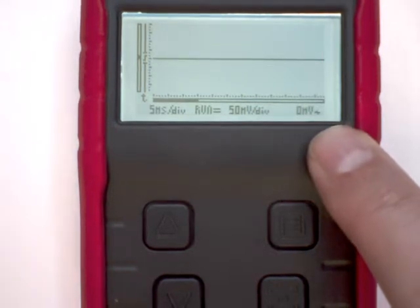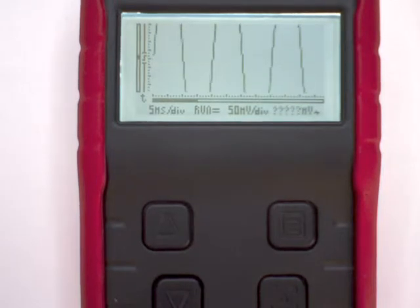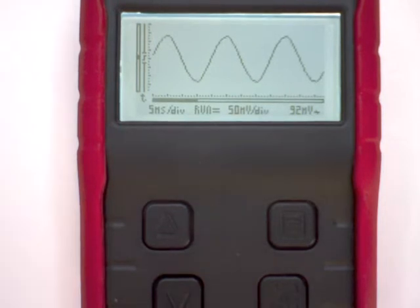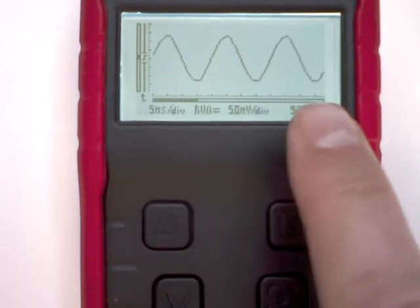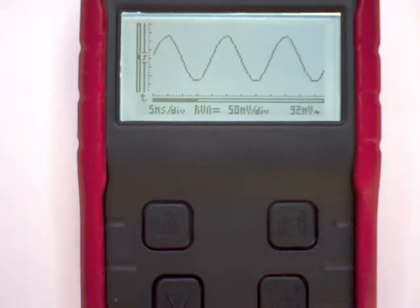Now if we turn the potentiometer just a little bit clockwise then immediately the signal goes off screen because the output is too high. Let's turn it down again and we get a nice display on screen, and in the lower right hand corner we can see our RMS voltage.